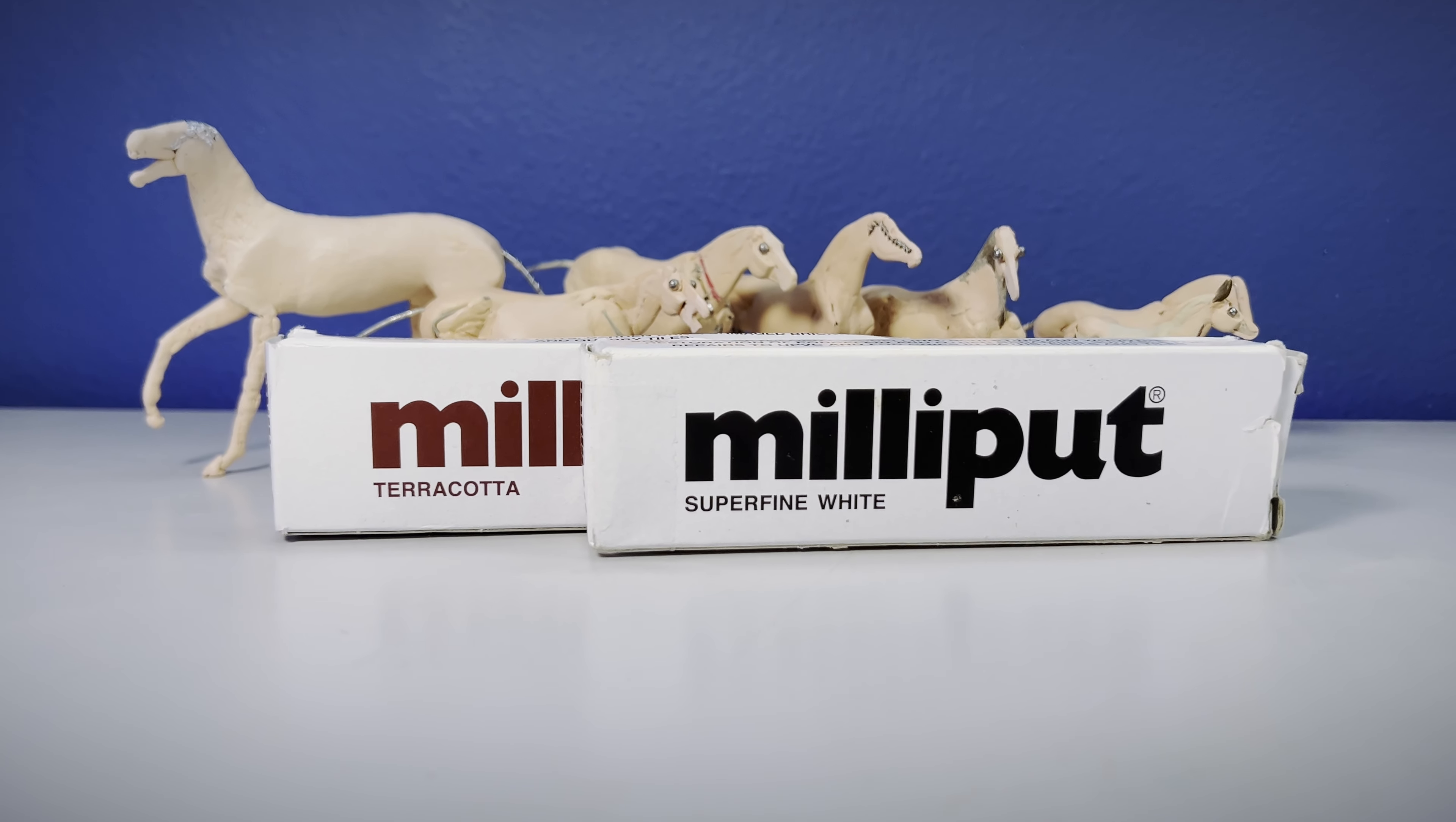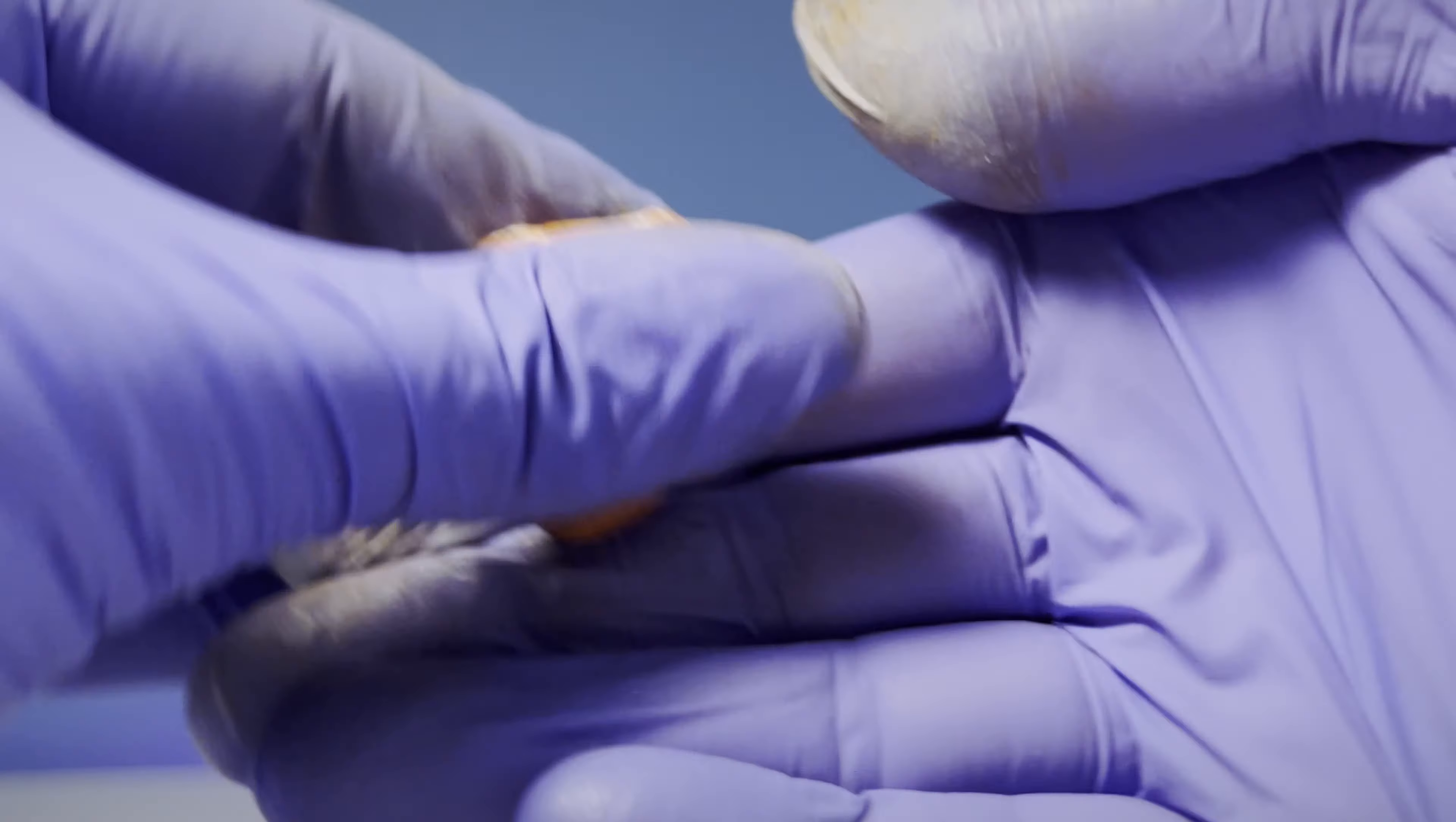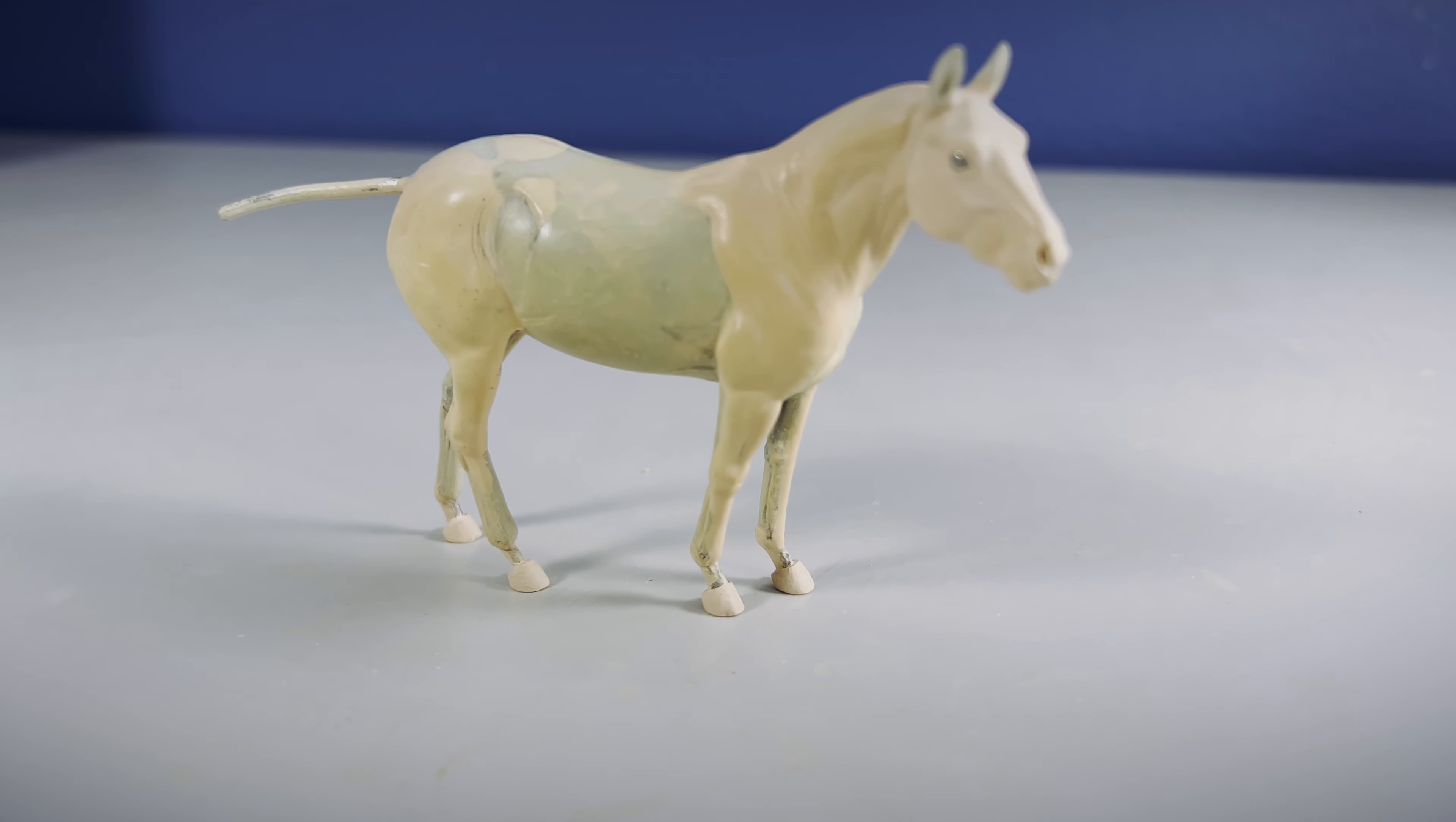Speaking of unique properties of the different Milliput colors, it's possible to mix them together to create your own shades or create different consistencies. For example, I love to mix terracotta and white together as I find I get some firm consistency from the terracotta and gain some finer detail from the white. It's like I get the best of both.